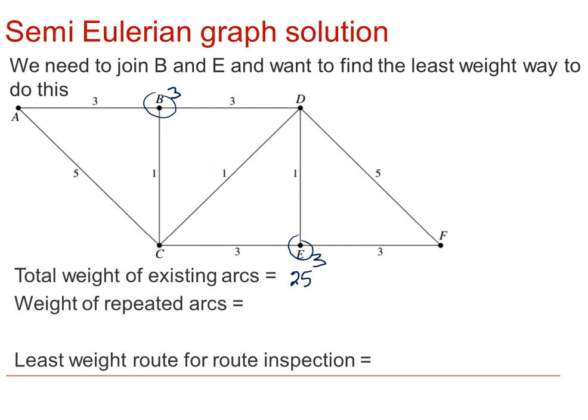So we need to look at some ways of adding or reusing arcs in the route. Well, we could, to get from B to E, we could go via C. And that would mean adding this 1 and this 3. So that would mean adding 4. Or we could go via B, C, D, E. So in which case we'd be looking at the 1, the 1 and then another 1. So we'd only be adding 3.